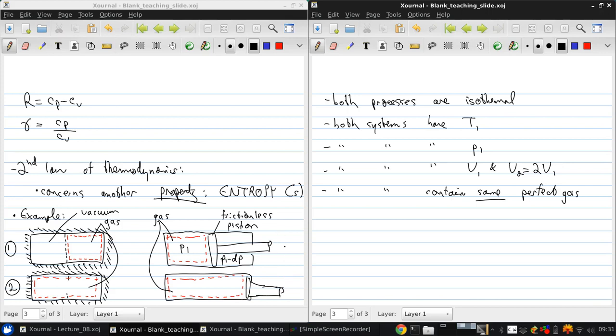So then if we write the first law in control mass form for both systems, this is what we get. I'll do them side by side. So the change in internal energy is equal to the heat transfer minus the work. But we have no heat transfer and we have no work. So U2 minus U1 equals zero. CV(T2 minus T1) equals zero. So T2 equals T1.